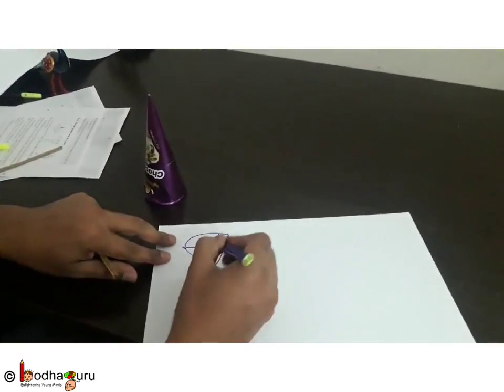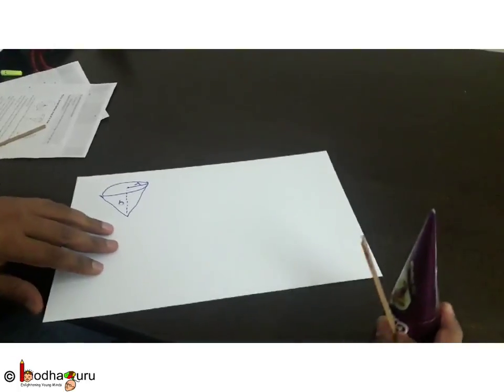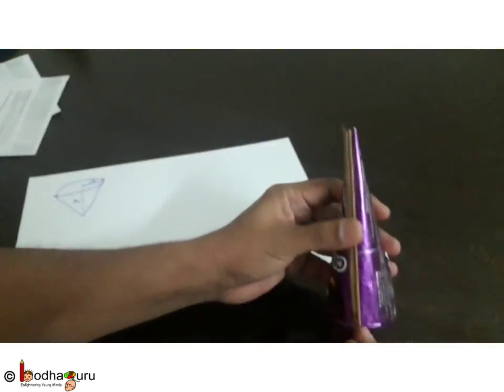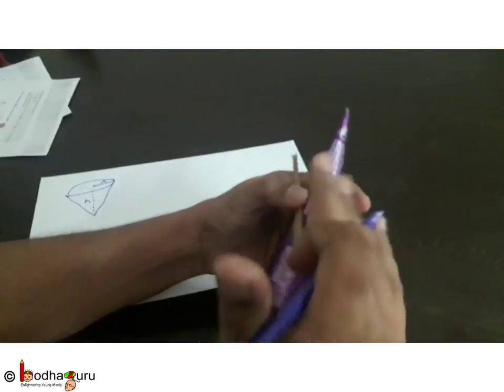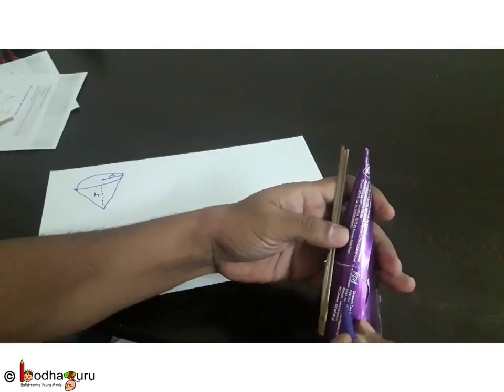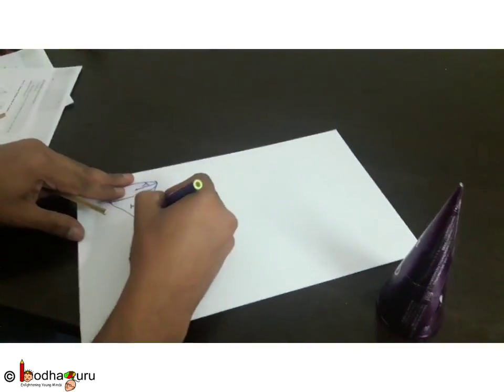So this is the height of this cone. The third parameter is called the slanting height of this cone, which is this slanting portion. And this is represented by L.